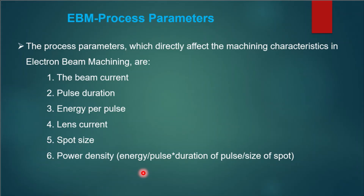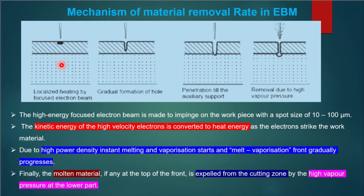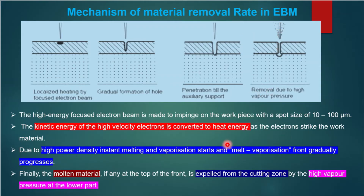The mechanism of heating is as follows: initially, the electron beam hits the workpiece, causing localized heating by the focused electron beam, resulting in the formation of a hole. Penetration continues to the depth required. Melting happens, and finally the material is removed due to the high vapor pressure created. The molten material is expelled from the cutting zone by the high vapor pressure at the lower part.